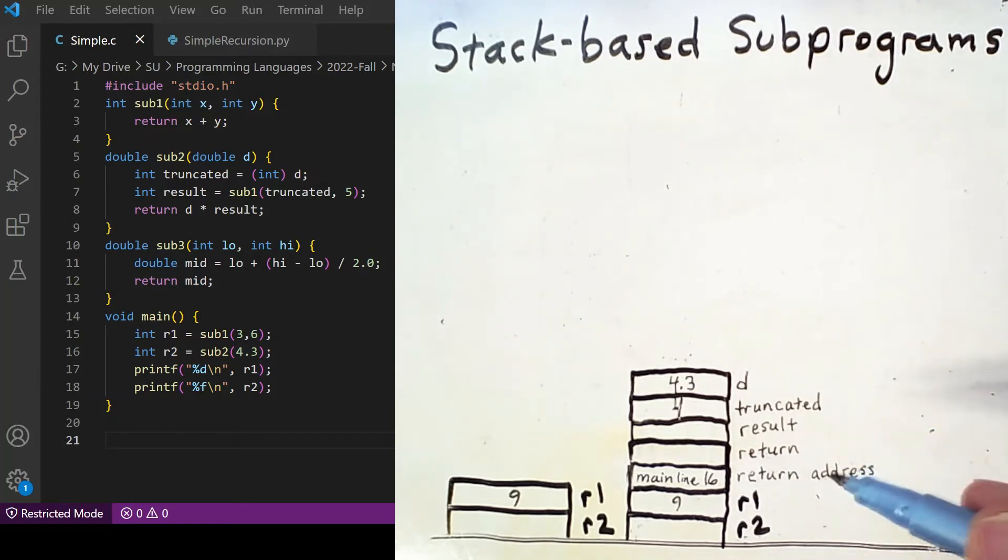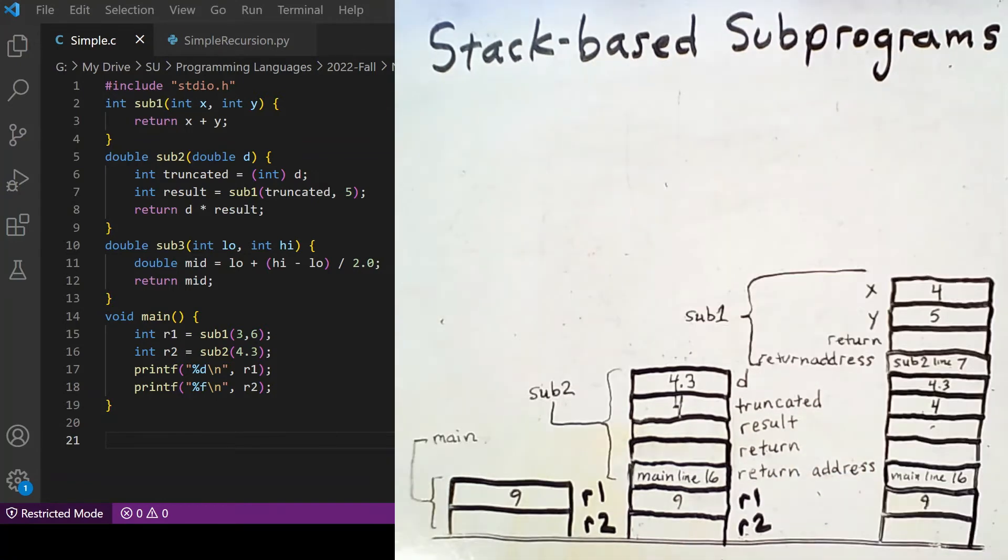So the activation record for sub-1 will be added on top of this. And now we have the activation record for sub-1 with its parameter values of 4 and 5 filled in, and its return address specified as line 7 of the function sub-2. Once again, it would be more precise in an actual implementation.